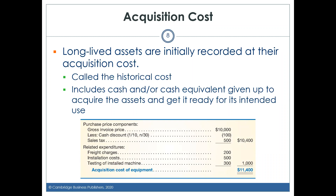Here's an example. The company buys a piece of equipment. The gross invoice price was $10,000, but the company paid within the discount period and got a $100 discount, and sales tax was $500 — so the purchase price was $10,400. Other costs treated as part of the acquisition cost include $200 for shipping, $500 for installation, and $300 for testing — $1,000 in additional costs. So the total acquisition cost is $11,400.